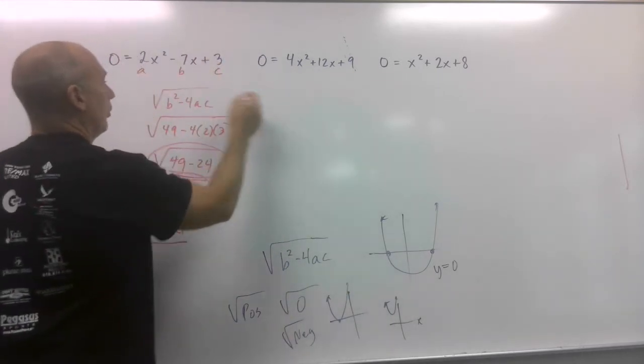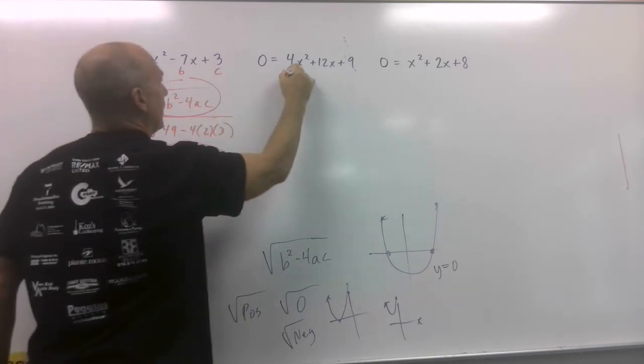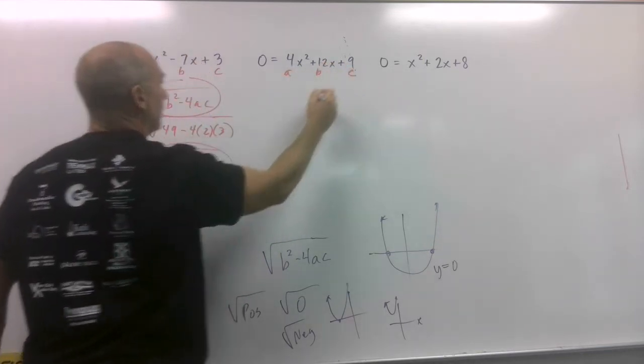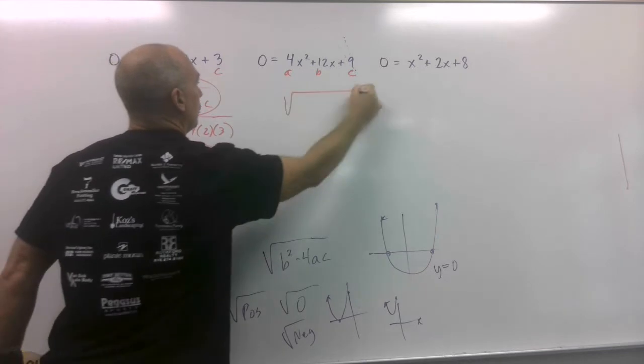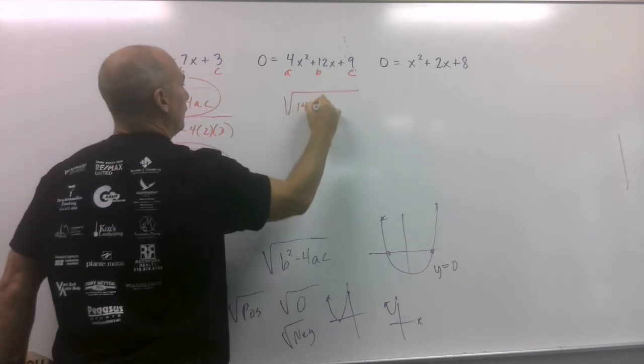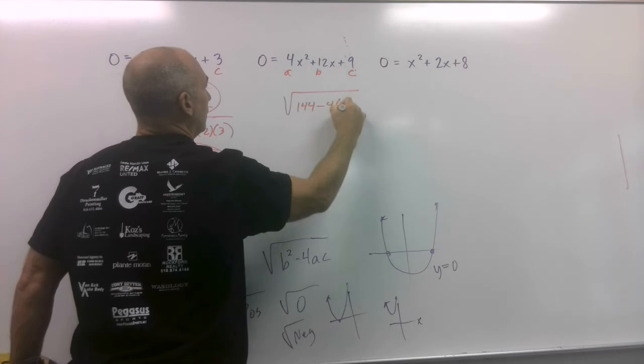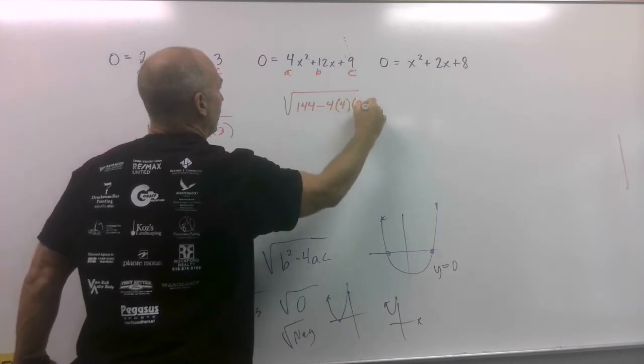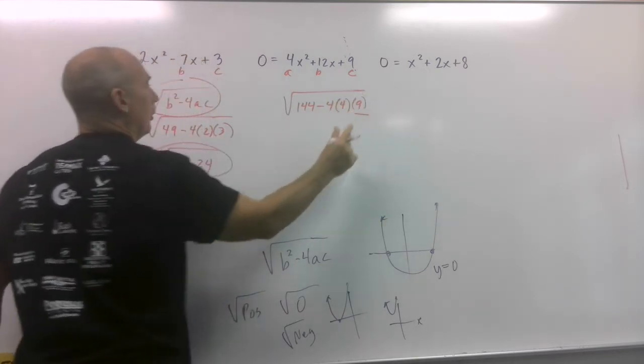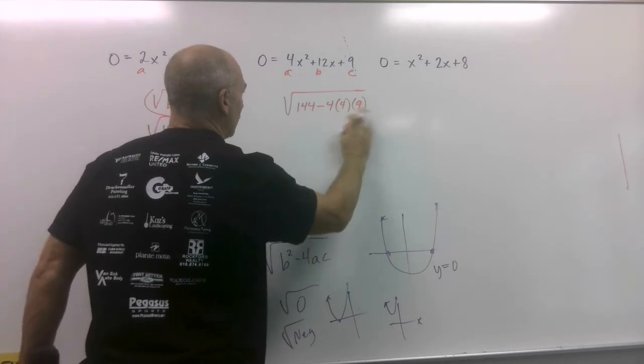Let's try this one. So, same thing. Here's my a, here's my b, here's my c. So, the square root of b squared, 144, that's 12 squared, minus 4 times a times c.